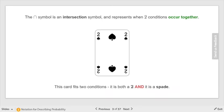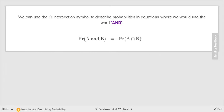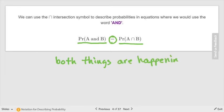The intersection symbol represents when two conditions occur together, like the two roads. This card fits into two conditions: it's both a two and it's also a spade. You see that's two of spades, so it has two conditions. You see the word and there. We use the intersection symbol to describe probabilities in equations where you see the word and.